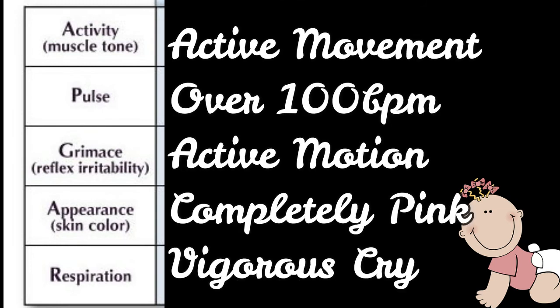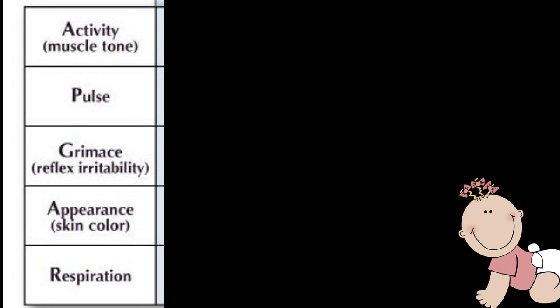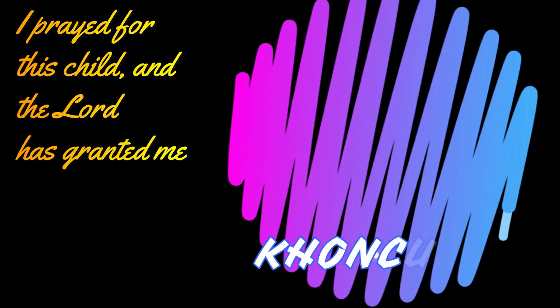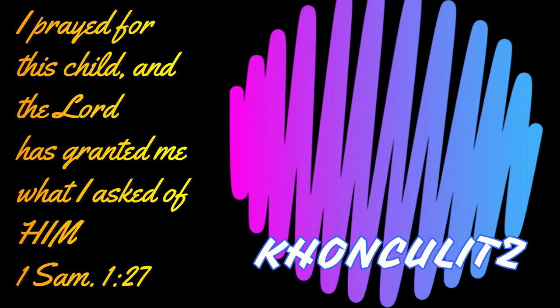Active movement for activity, over 100 BPM for pulse, active motion for grimace, completely pink for appearance and skin color, and vigorous cry for respiration. All of this will have 2, 2, 2, 2, 2, and 2 points, which will have a total score of 10 points, which has the interpretation that 7 to 10 points means normal for a newborn baby.